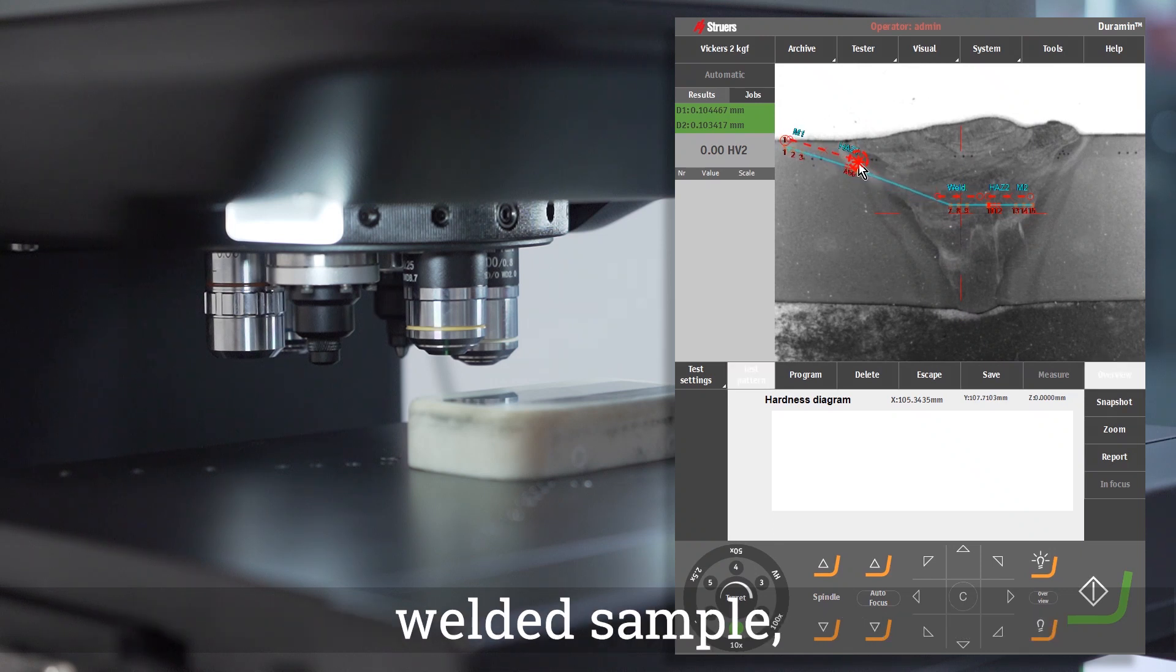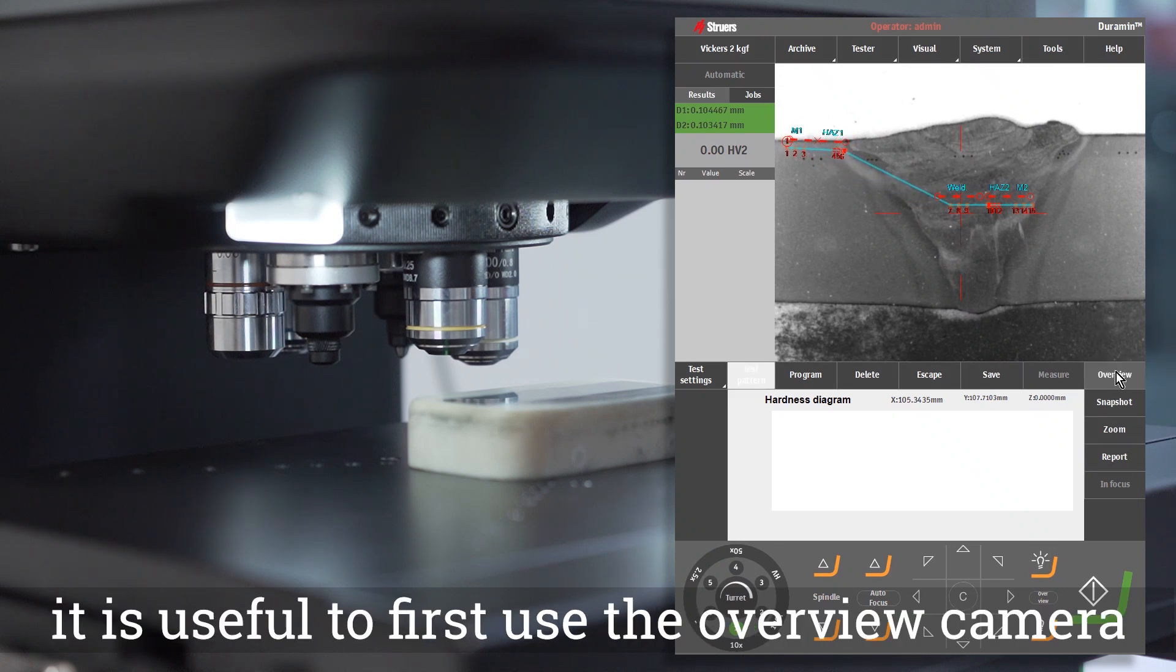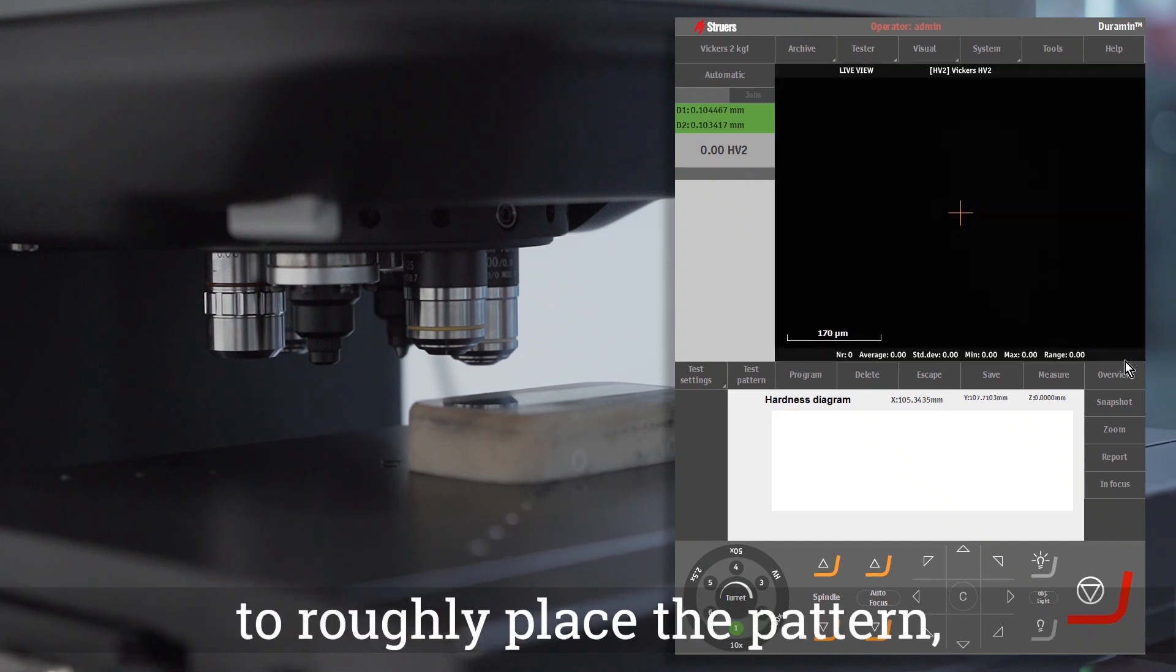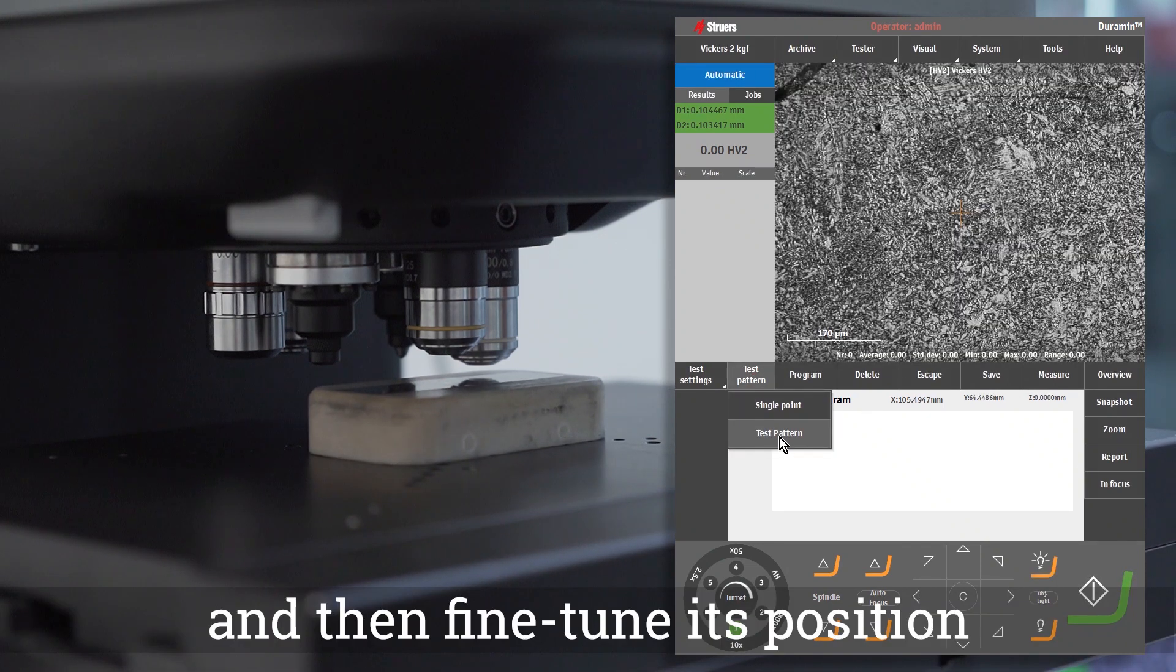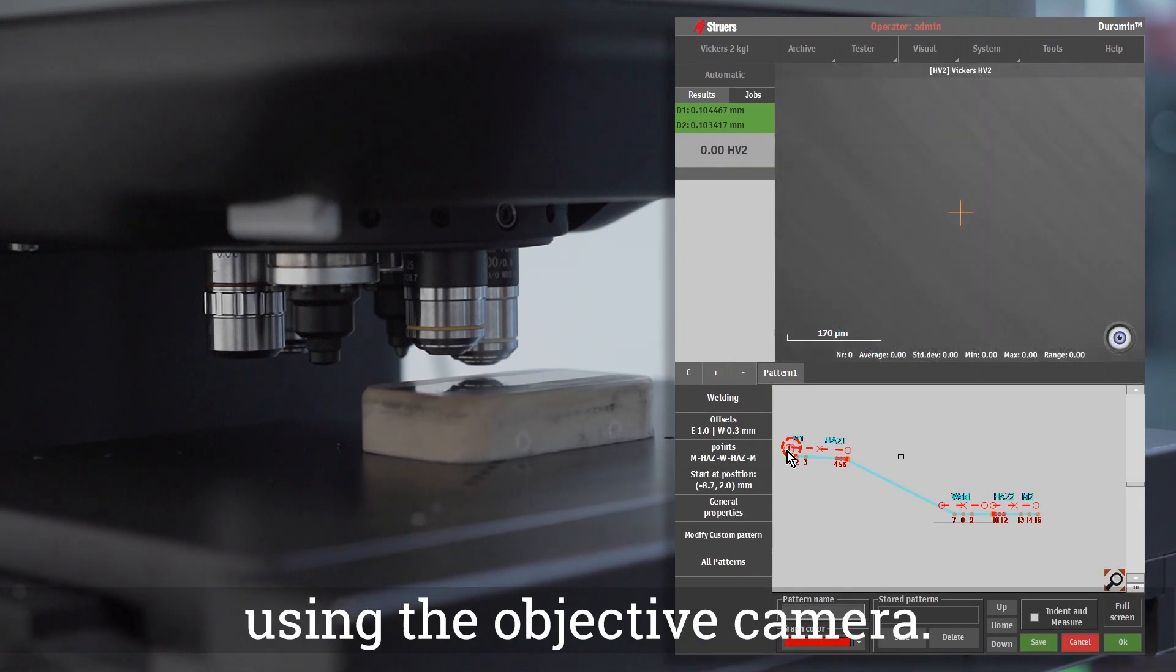For example, when working on a large welded sample, it is useful to first use the overview camera to roughly place the pattern, and then fine-tune its position using the objective camera.